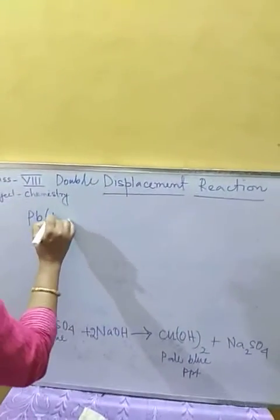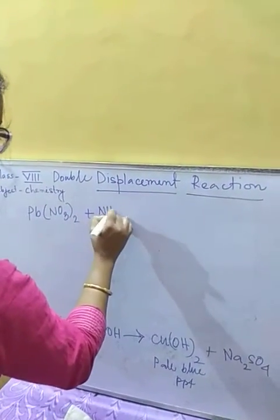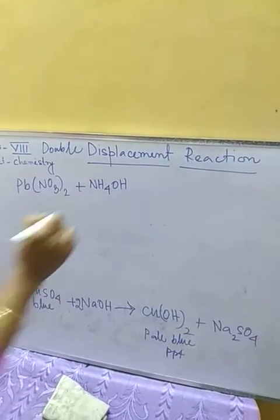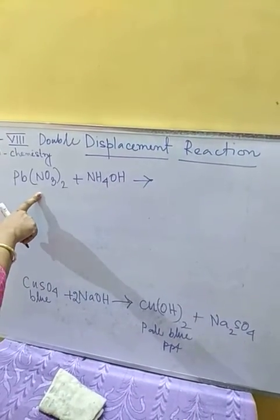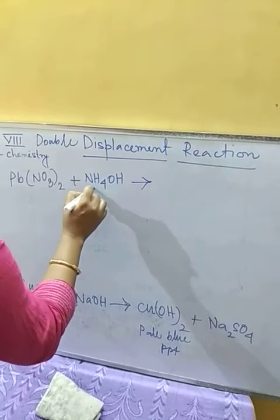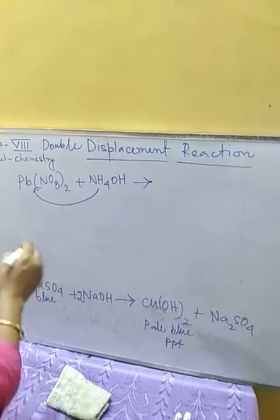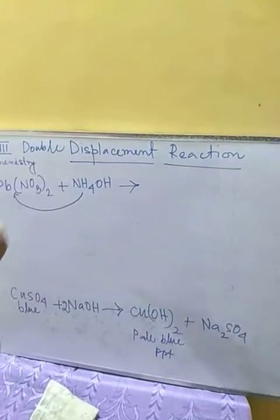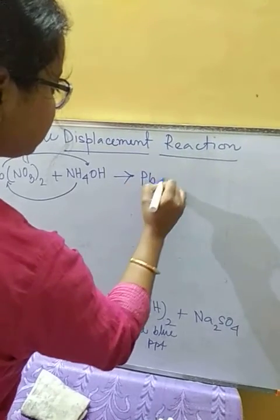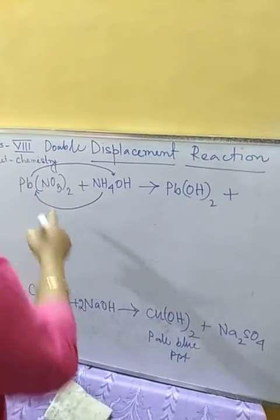Lead nitrate, when reacted with ammonium hydroxide — both are colorless — undergoes double displacement. Lead displaces ammonium, which leaves hydroxide, and lead joins with hydroxide to produce a precipitation of lead hydroxide Pb(OH)₂ plus ammonium nitrate (NH₄NO₃).